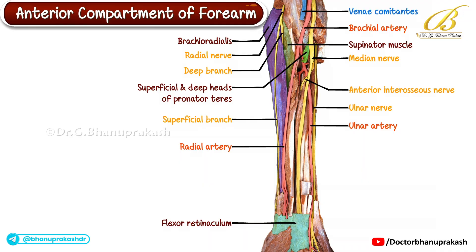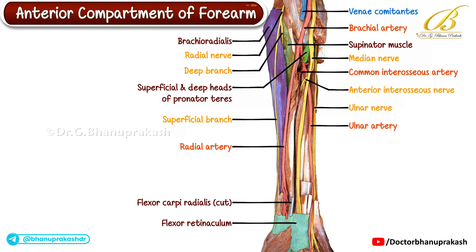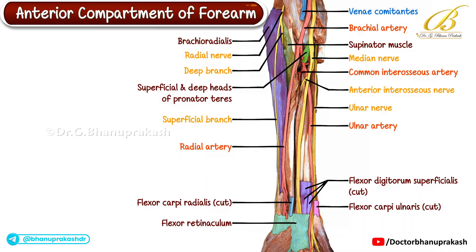From the proximal part of the ulnar artery, you can identify a branch — the common interosseous artery. Distally, the cut ends of the flexor carpi radialis, flexor digitorum superficialis, and flexor carpi ulnaris are also visible.